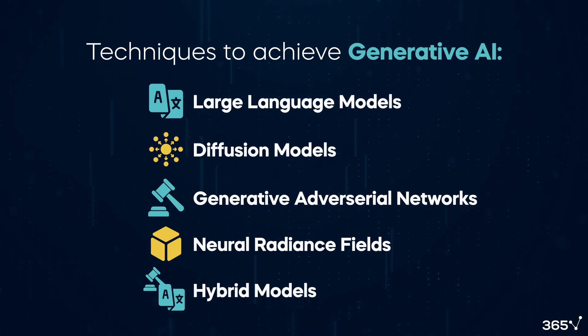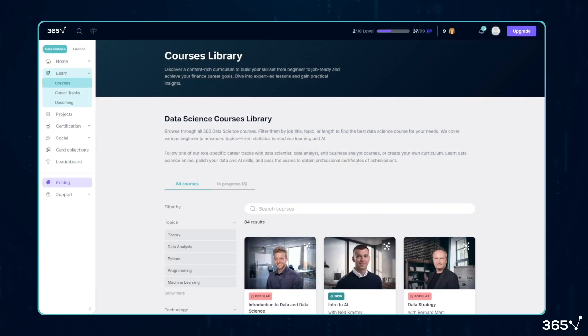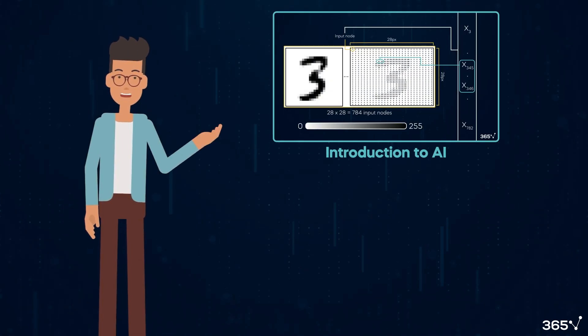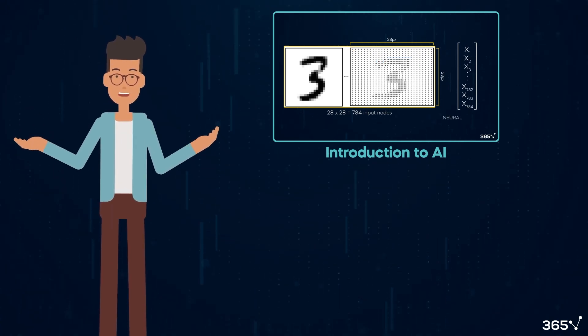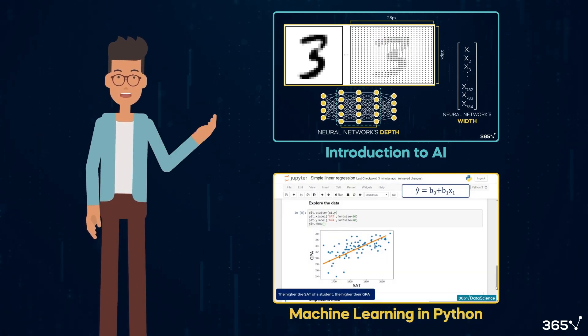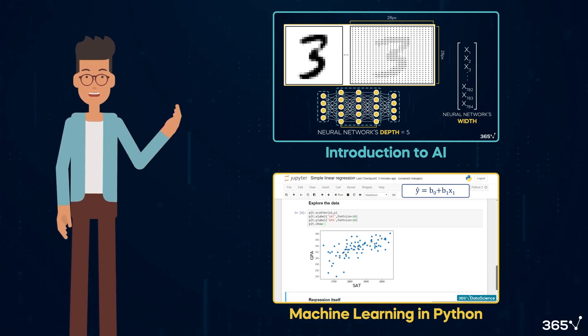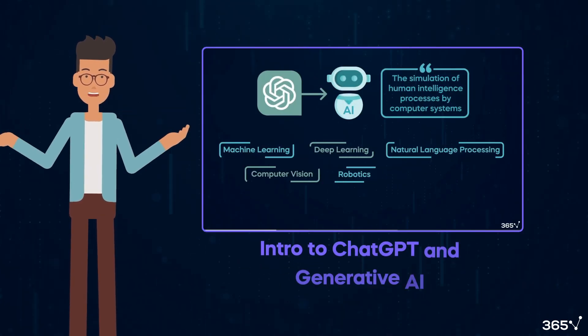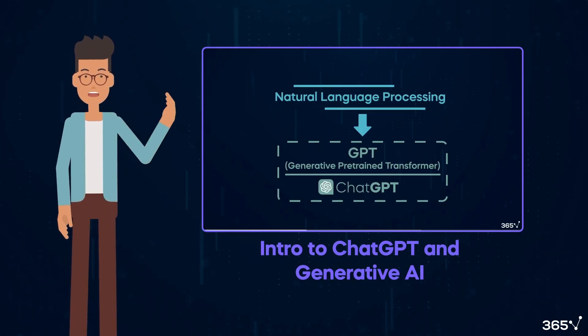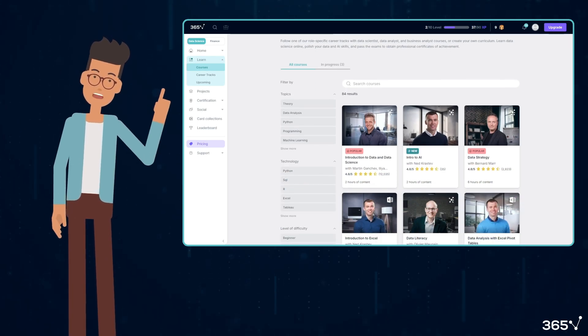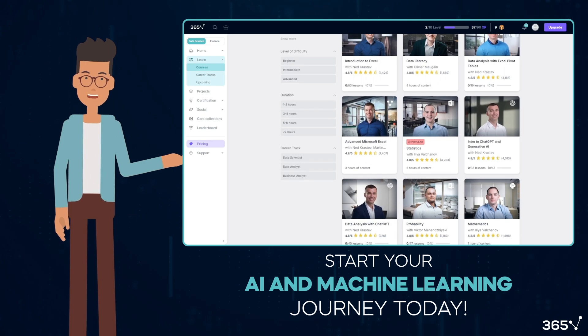If you're excited about AI and machine learning, 365 Data Science has the perfect courses to get you started. Our Introduction to AI course provides a comprehensive overview of artificial intelligence, while our Machine Learning in Python course offers hands-on experience with popular ML libraries. For those specifically interested in Generative AI, our Intro to ChatGPT and Generative AI course teaches effective prompt engineering to help boost your productivity exponentially. Explore our full range of courses and start your AI and machine learning journey today.